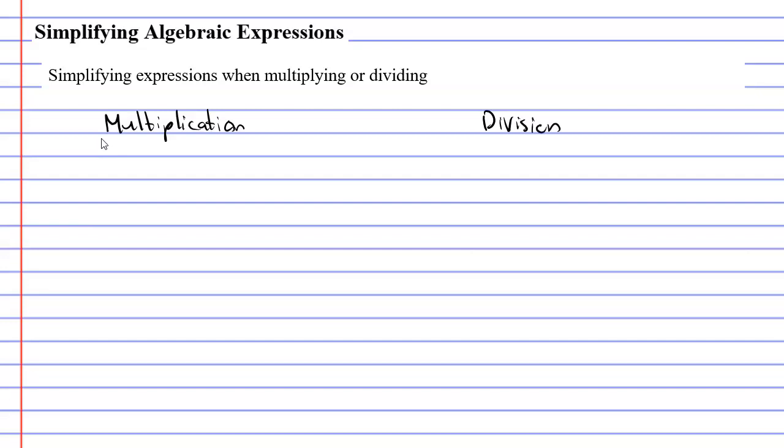So a really simple example that involves multiplication would be to simplify the expression 2a times 3b. And some of you know how to do this, it's really simple. All you do is you multiply the numbers 2 times 3, which gives us 6, and then you write the pronumerals next to that. We had a and b, so we get the simplified expression 6ab.